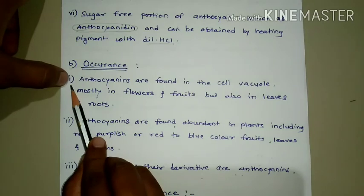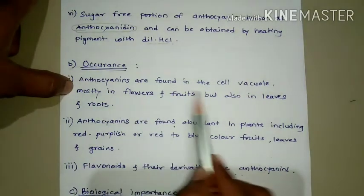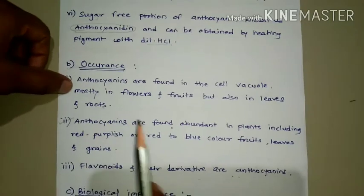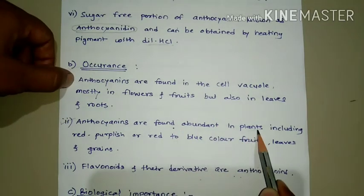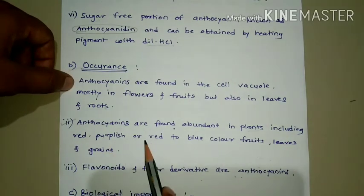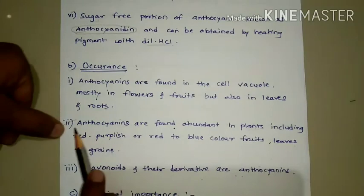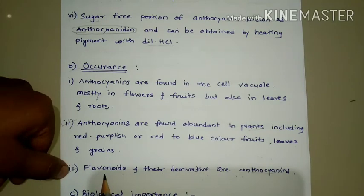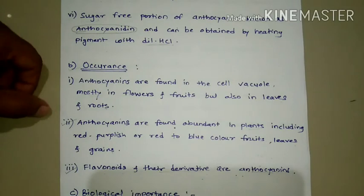The occurrence of anthocyanin: first, anthocyanins are found in cell vacuoles, mostly in flowers and fruits, but also in leaves and roots. Second, anthocyanins are found abundantly in plants, including red, purplish, or red-to-blue colored fruits, leaves, and grains. Third, flavonoids and their derivatives include anthocyanins, meaning anthocyanin content is also present in flavonoids in derivative form.